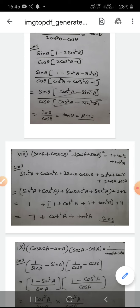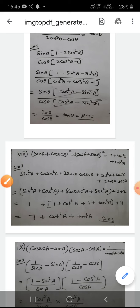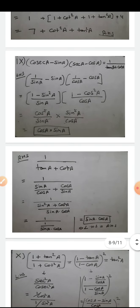Now sin A and cosec A are reciprocals, so 2·sin A·cosec A = 2·1 = 2. Similarly cos A and sec A are reciprocals, so 2·cos A·sec A = 2. Then sin²A + cos²A = 1, cosec²A = 1 + cot²A, sec²A = 1 + tan²A. Adding: 1 + (1 + cot²A) + (1 + tan²A) + 2 + 2 = 7 + tan²A + cot²A. LHS = RHS.